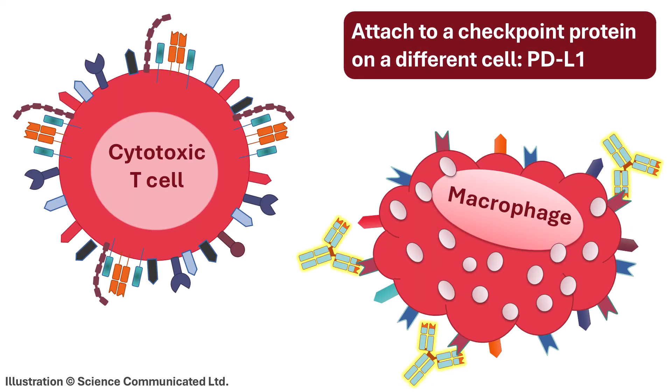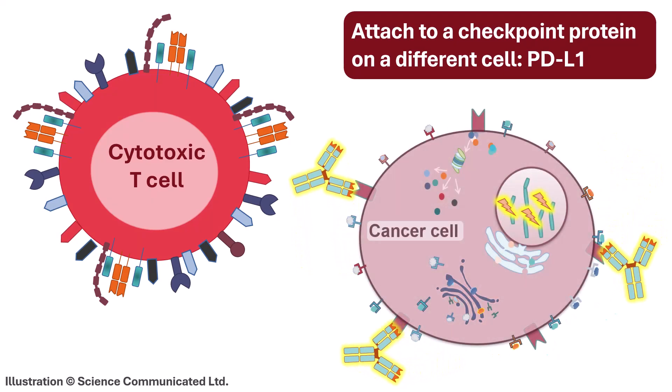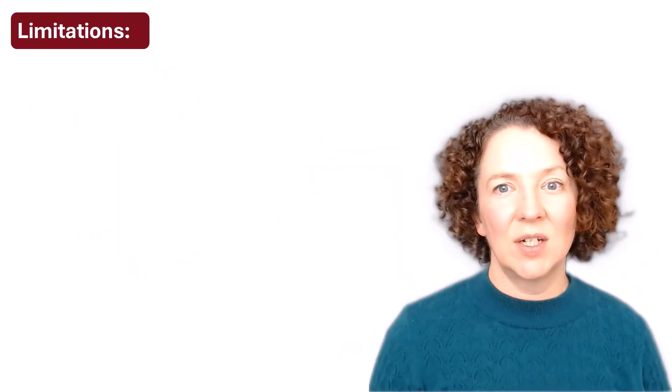Sometimes they attach to the partner protein which is on a different cell, like PD-L1. Inside tumours, sometimes white blood cells like macrophages have PD-L1 on their surface. Sometimes it's cancer cells, sometimes it's both. Whatever the type of cell, the antibody will attach.